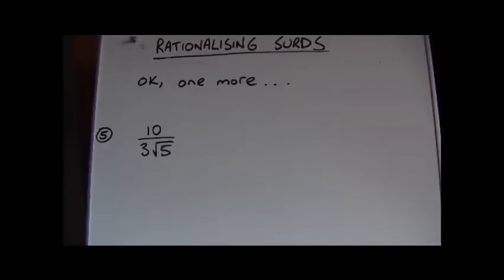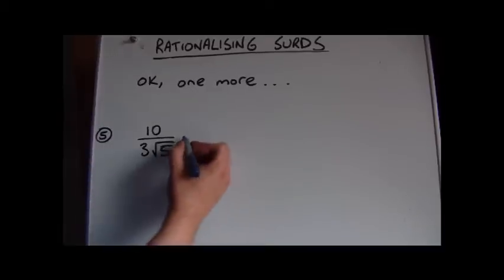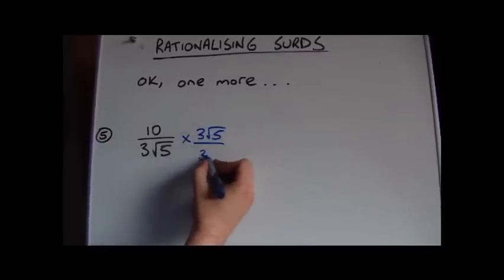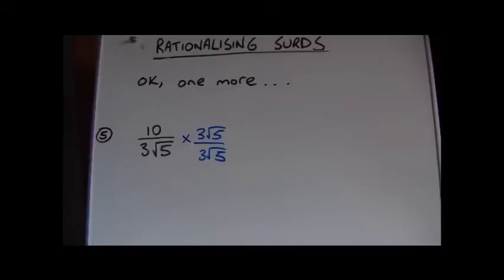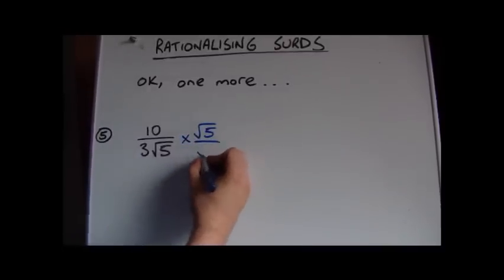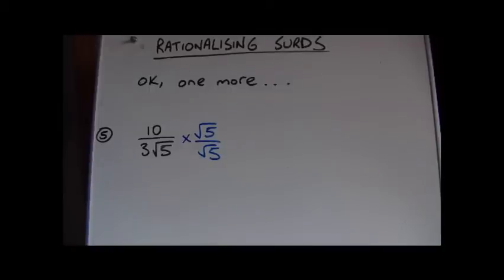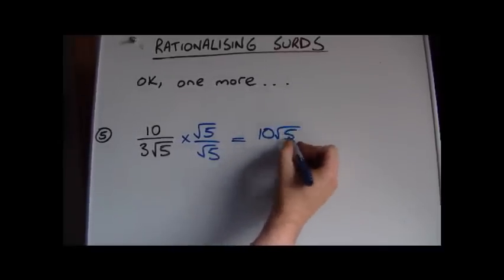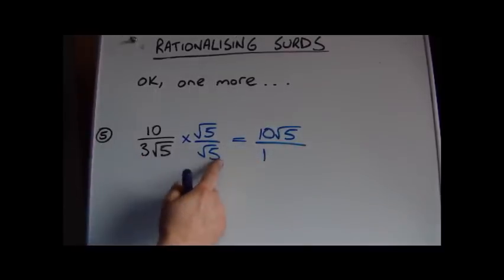Finally, this one contains a single surd in the denominator — it looks like the first simple examples. You might think the best approach is to multiply by 3 root 5 over 3 root 5, and you would get the right answer, but you'd need to do some cancelling. It's smarter to multiply only by the surd part — just root 5 over root 5 — since that's all we need to rationalize the denominator.